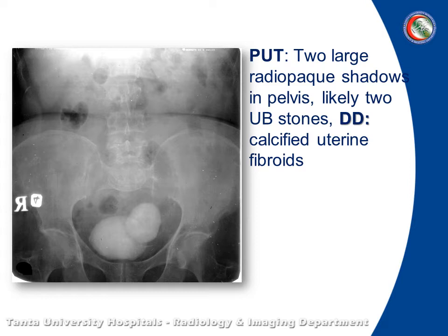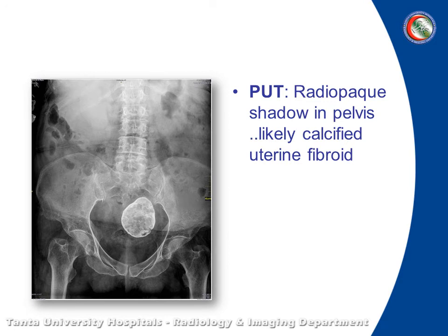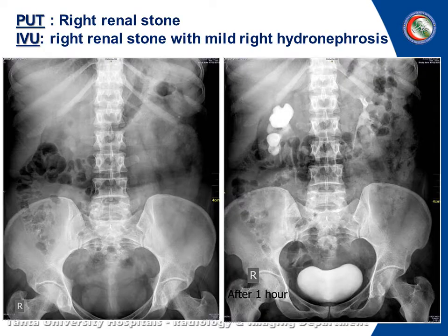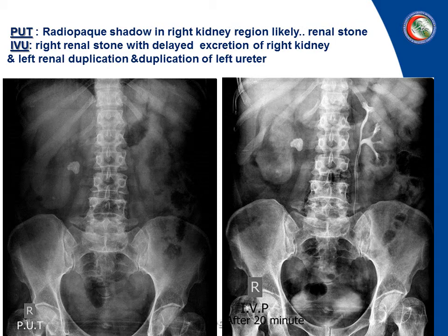On plain X-ray, it is not acceptable to see a radio-opaque shadow — if there is one, it is pathological. Here it refers to vesical calculi. This one shows a well-defined, rounded, radio-opaque shadow, but it is not in the normal site of the urinary bladder, so it is likely a calcified uterine fibroid. Here on plain X-ray there is a faint opaque shadow in the right renal area, and on IVU there is a filling defect with mild hydronephrosis. Here on plain X-ray there is a radio-opaque shadow in the pelvis, and on IVU there is delayed excretion. Also, don't be caught by the happy eye sign — there is duplication in the left kidney and left ureter.